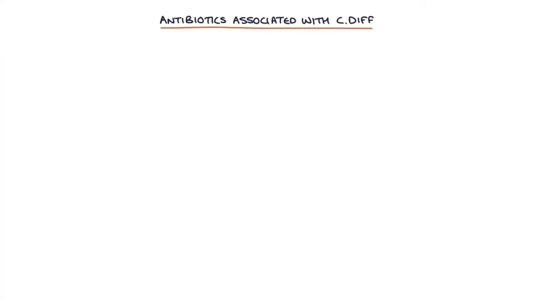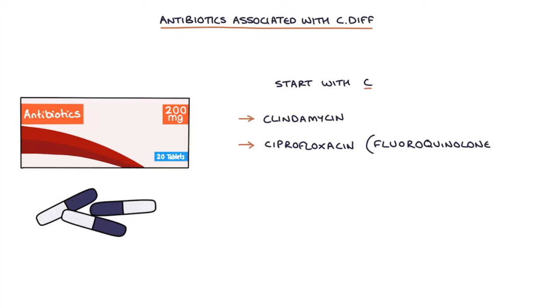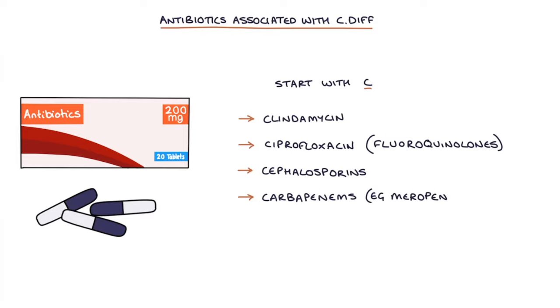Let's talk about the antibiotics associated with C. diff. The antibiotics most associated with C. difficile start with the letter C, and they include clindamycin, ciprofloxacin and other fluoroquinolones, cephalosporins, and carbapenems such as meropenem.